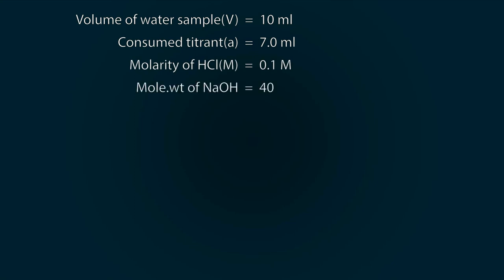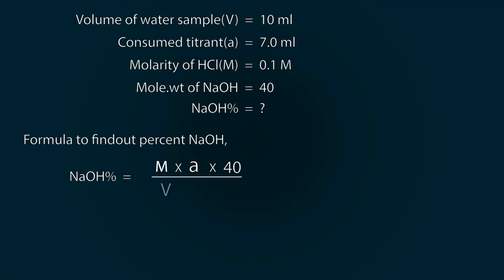Now let's find out the percentage. For that we have to find out the formula of NaOH percentage which is equal to molarity multiply by volume of titrant consumed multiply by 40, which is molecular weight of NaOH, divided by volume of water sample multiply by 1000, which is a standard constant to take it into decimeter cube, whole multiply by 100 to find out the percentage.